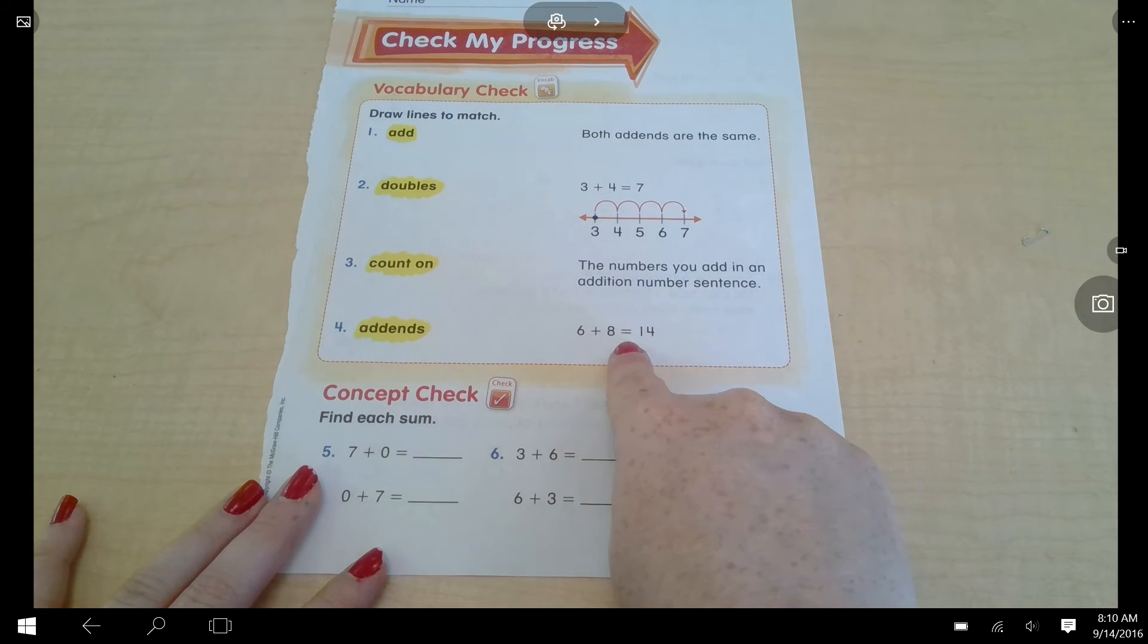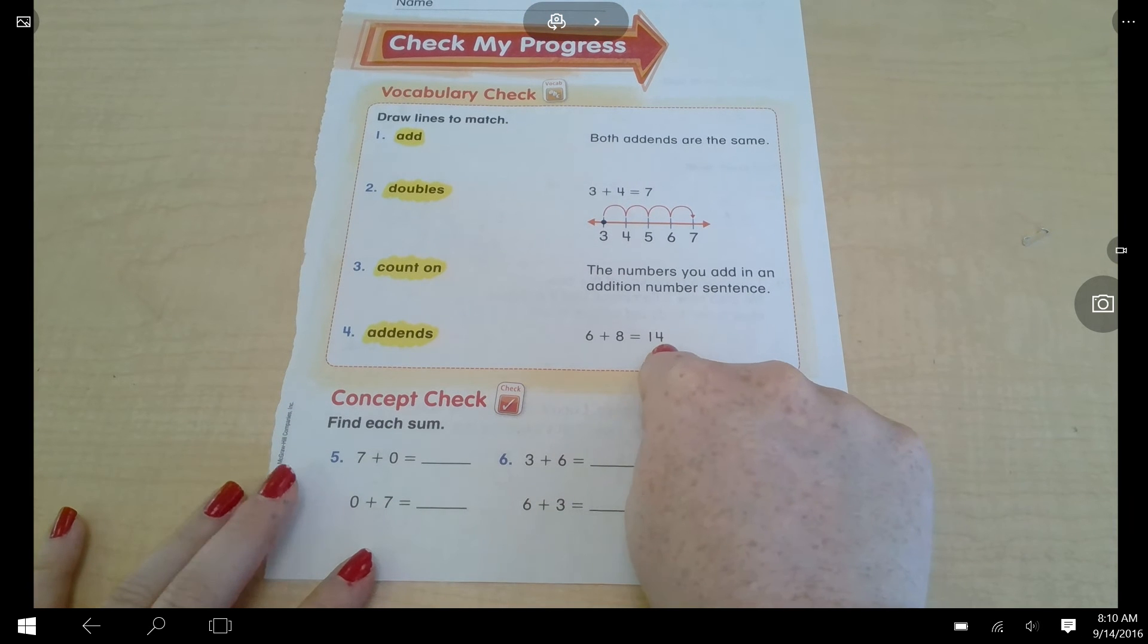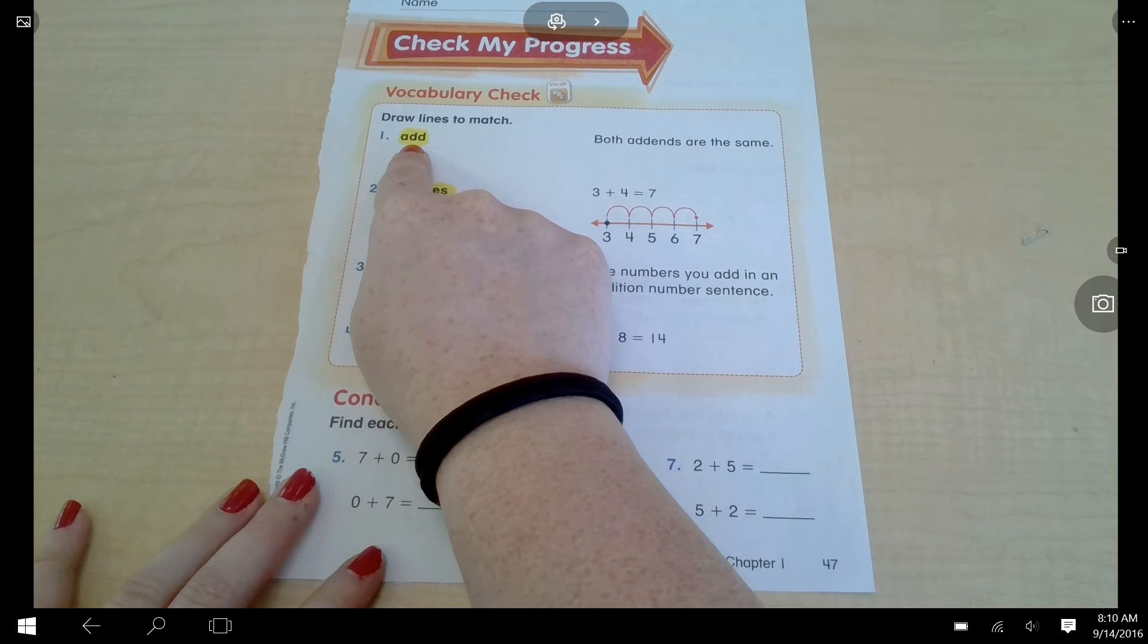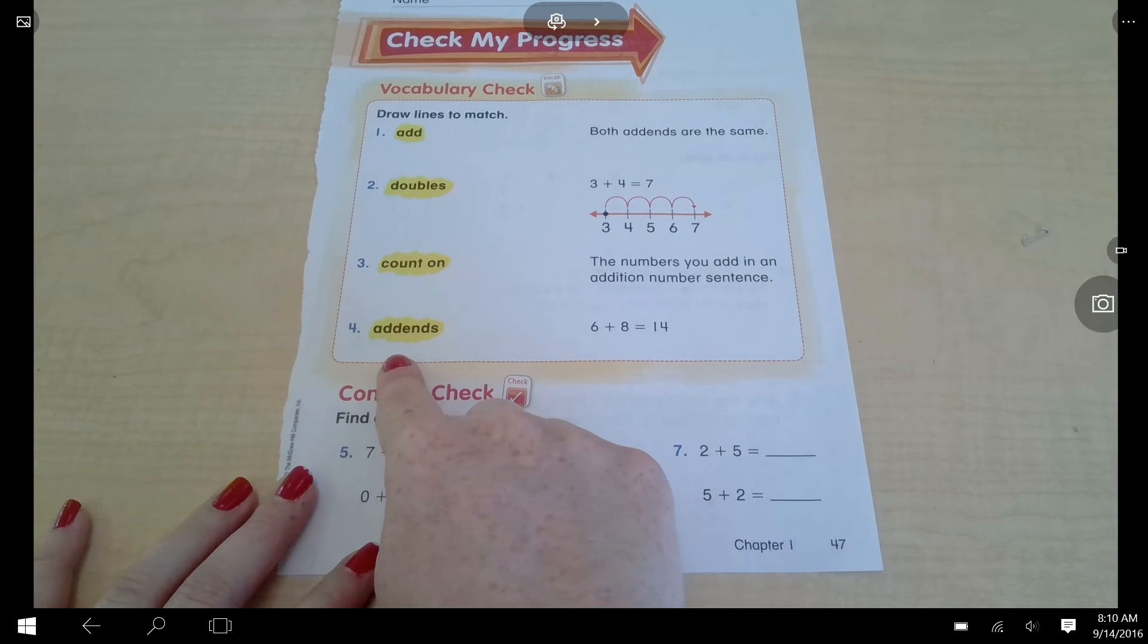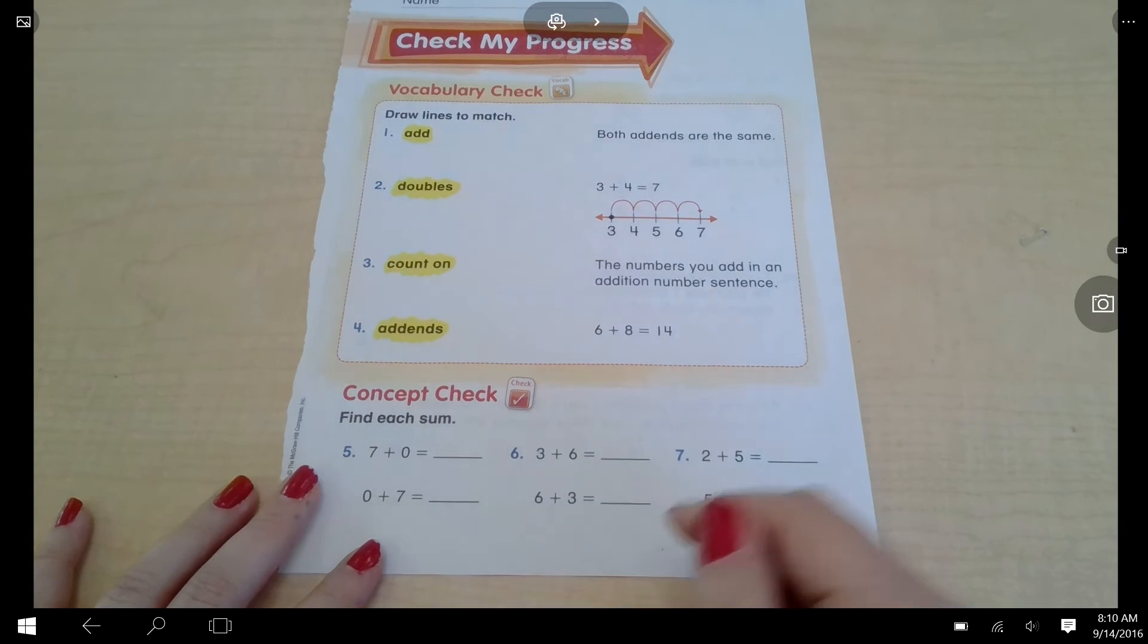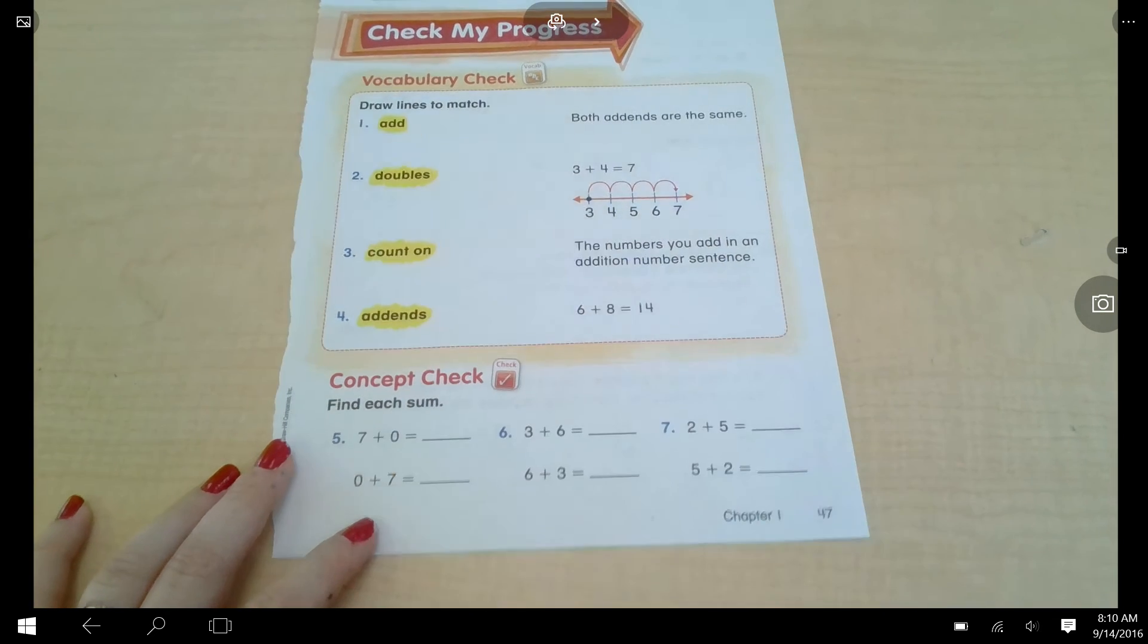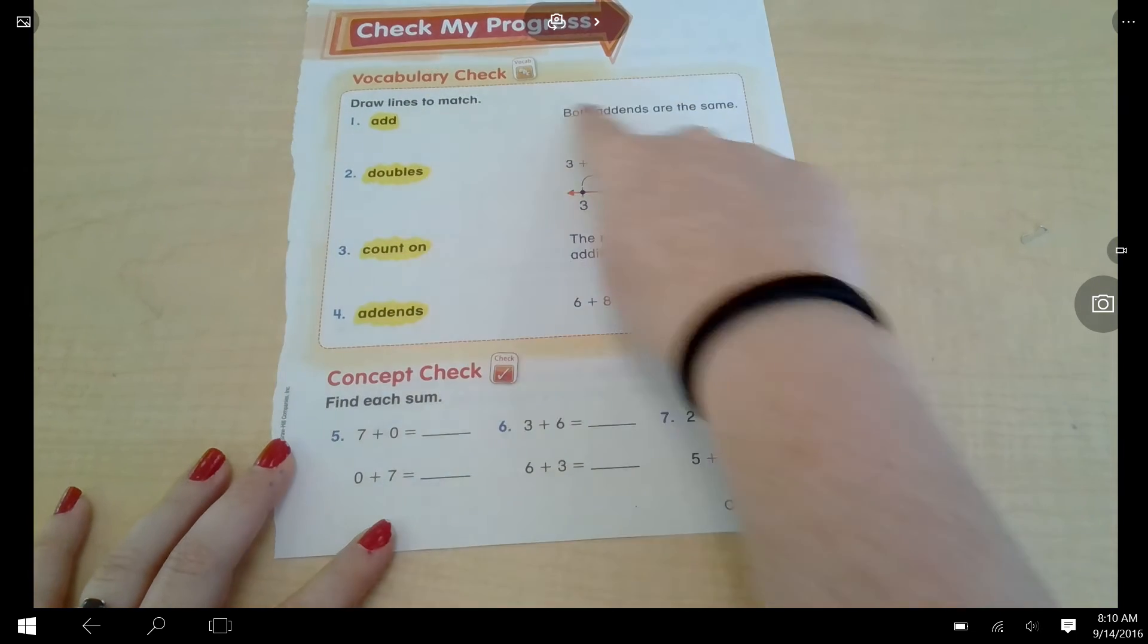Six plus eight equals fourteen. That's not a doubles fact and it's not showing count on. Hint, hint. So is that add or addends? I don't know. All right, pause the video, complete your vocabulary check. When you're done, push play. You should have four lines drawn in the vocabulary check.